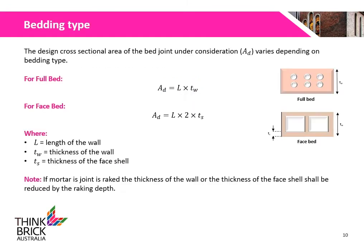The design cross-sectional area of the bed joint under consideration, AD, varies depending on the bedding type. The design cross-sectional area for full bed and face bed are shown in the equations, where L is the length of the wall, TW is the thickness of the wall, and TS is the thickness of the face shell. Typically, brick walls use a full bed of mortar.